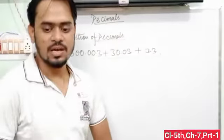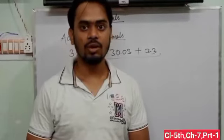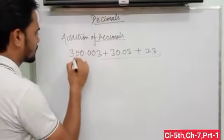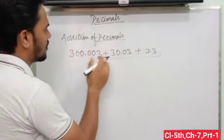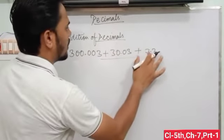Then first step is convert the given decimal to a like decimal. Like decimal means in every number, same number of digits after decimal.